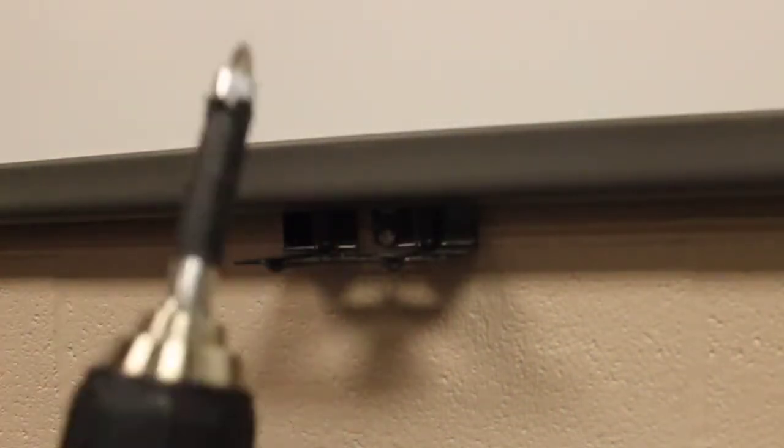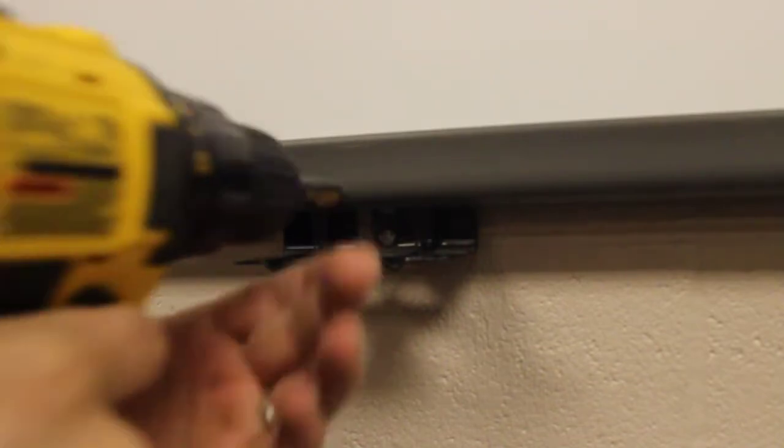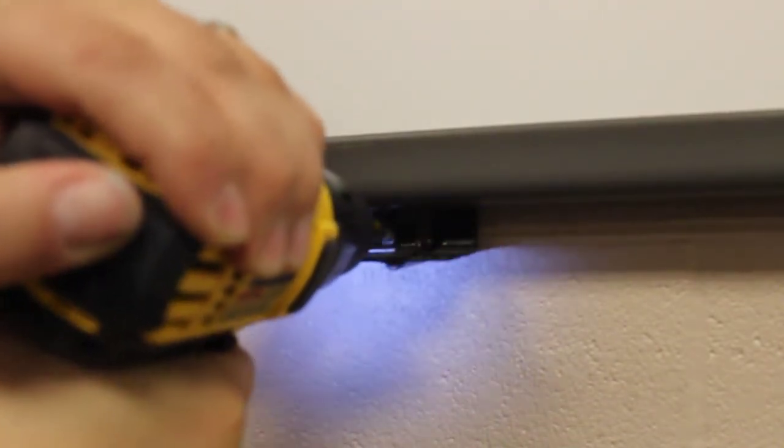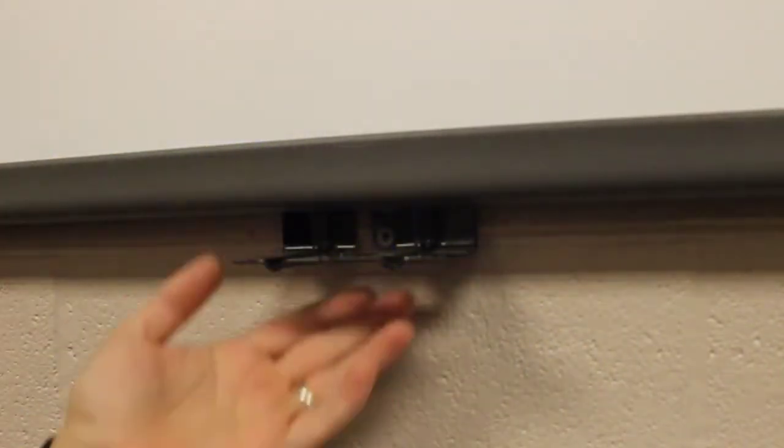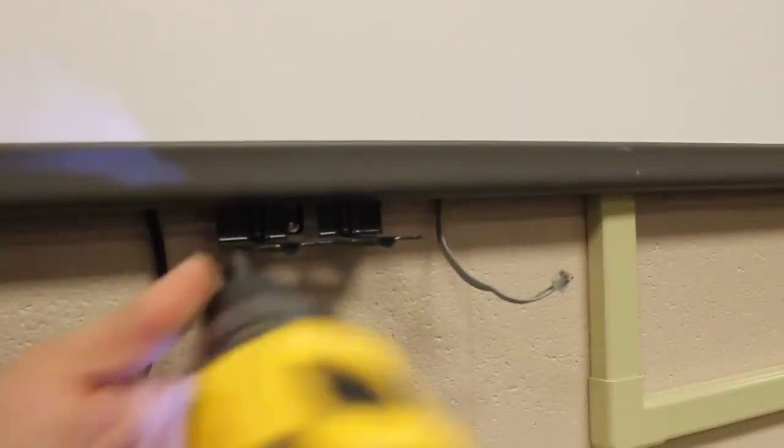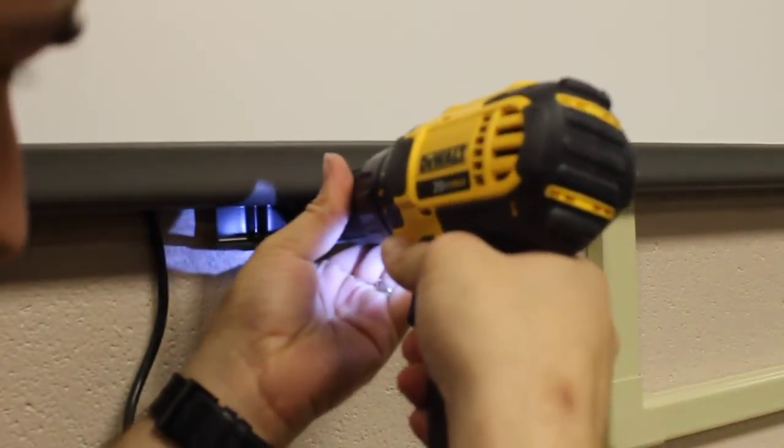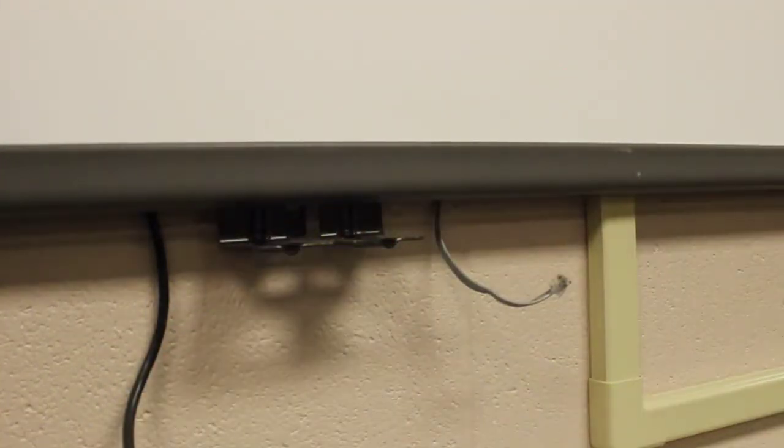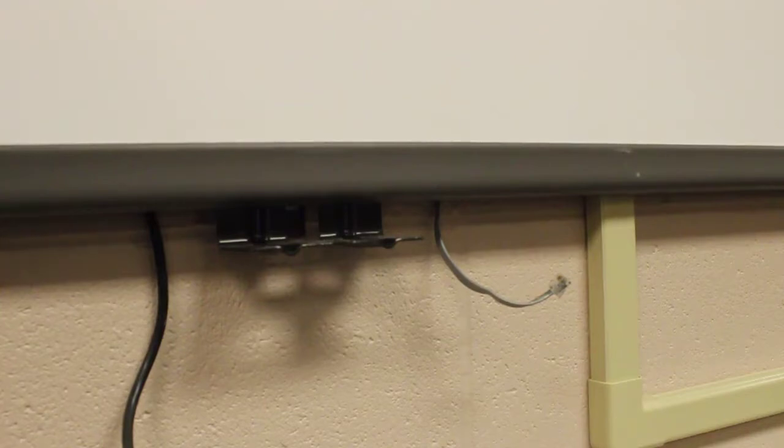You can see ours is just secured with a bolt. I'm just going to use my Phillips head on my DeWalt drill, 20 volt max. DeWalt is one of the better ones so I highly recommend that. And all you're going to do is you're just going to do that on both of the mounting brackets.